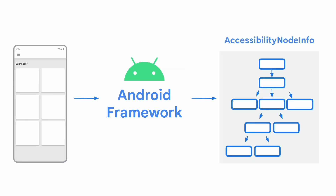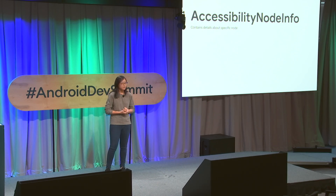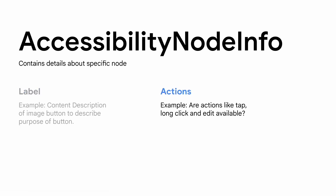In order to do this, it creates a tree of nodes that reflects what's currently displayed on the screen, and each of these nodes is referred to as an Accessibility Node Info. Accessibility Node Info contains a lot of details about that specific node, but I want to highlight two of the most important pieces. The first is the label — for example, the content description you set on an image button to describe its purpose. The second is the set of actions available on an element, such as tap or long click, or if it's a text view, whether there's an edit action available. The actions allow Accessibility Services to know how the user can interact with the element.